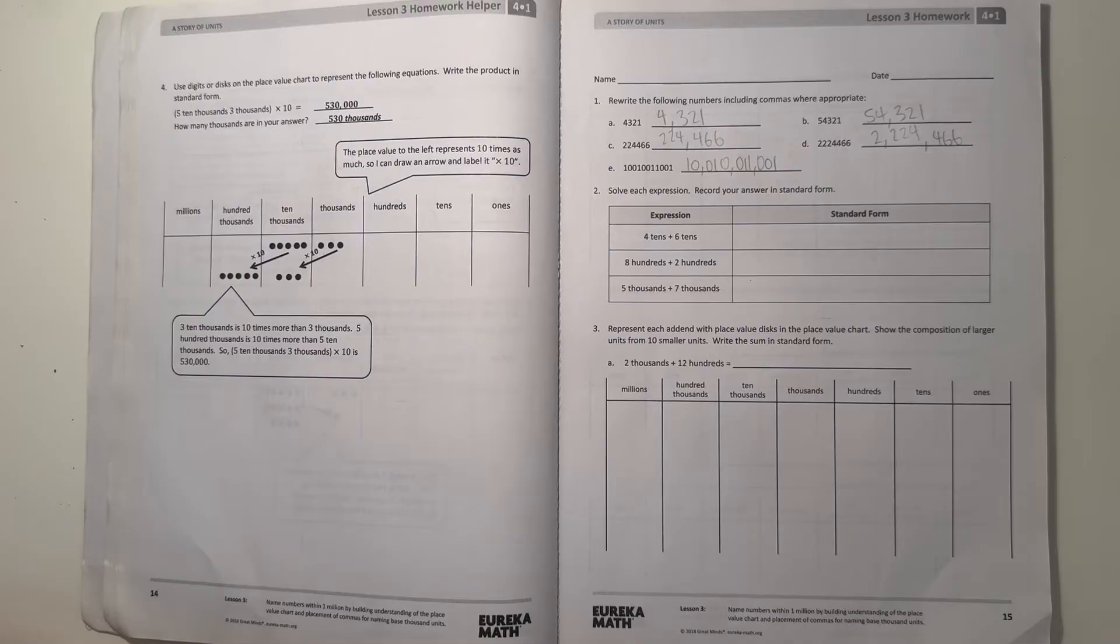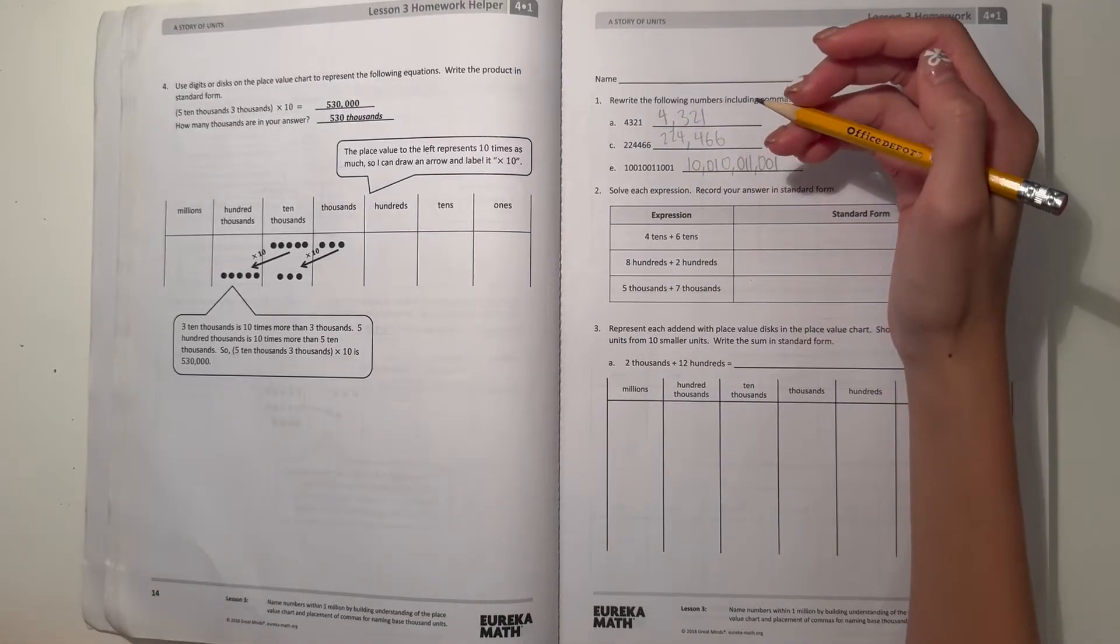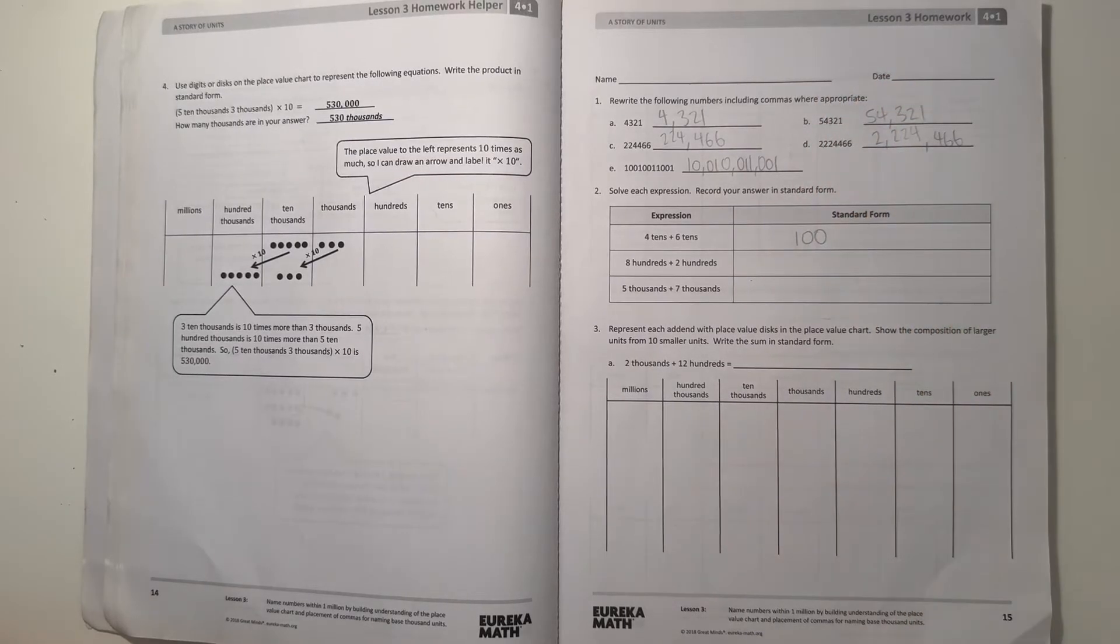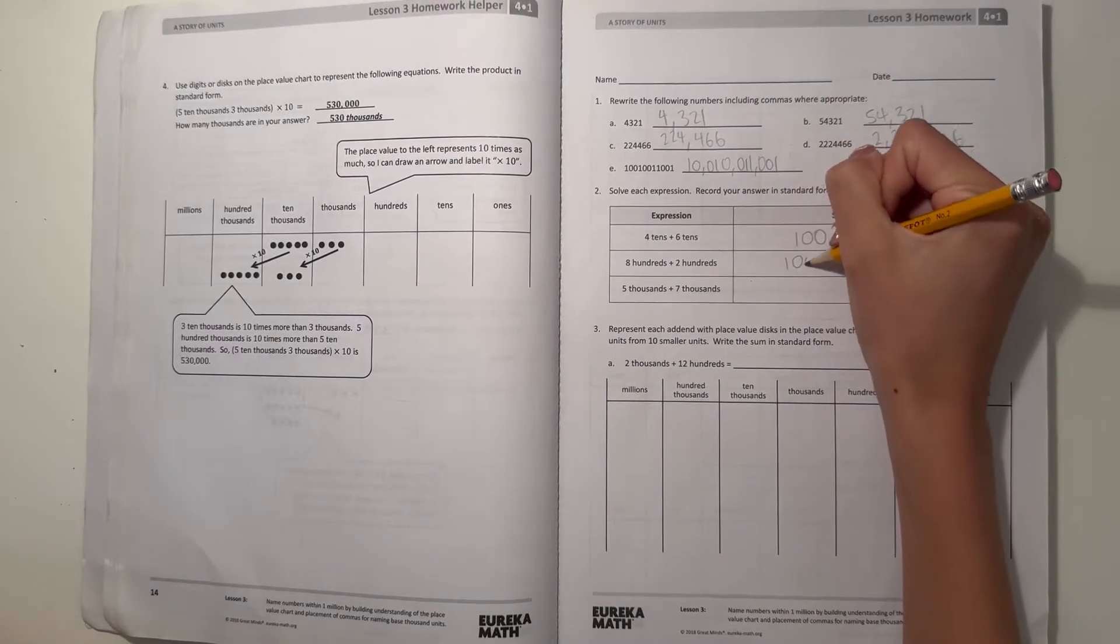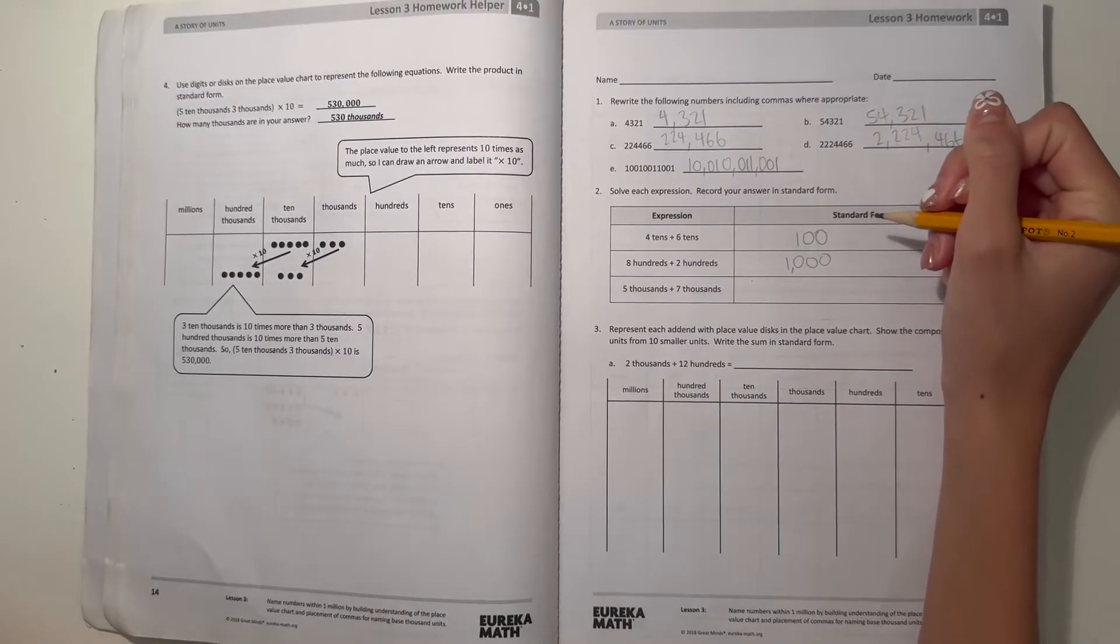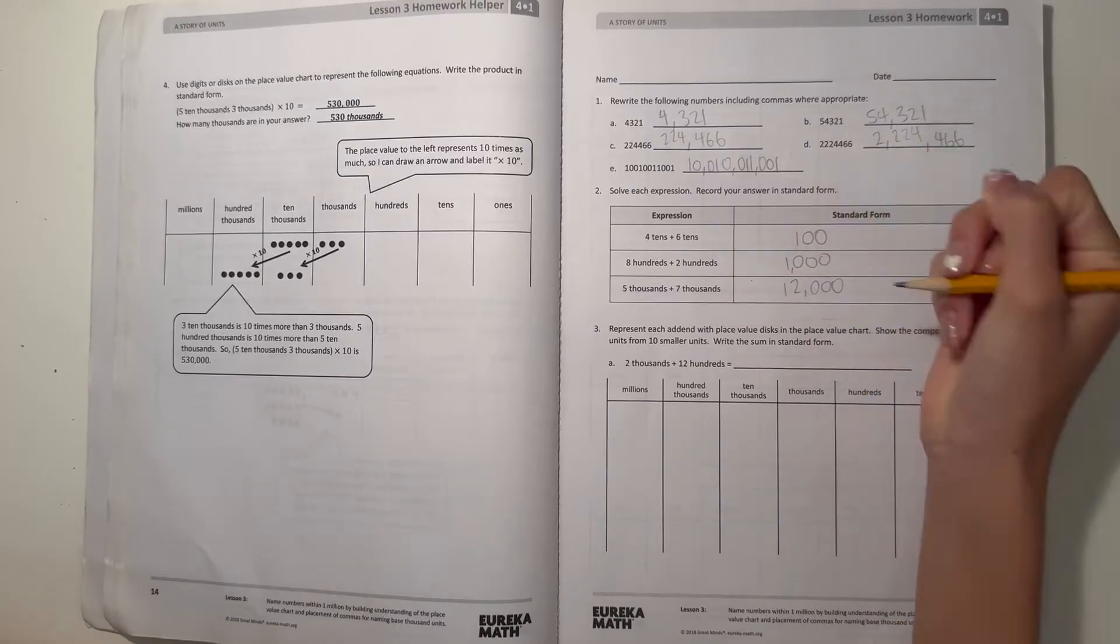All right, so number 2. Solve each expression and record your answer in standard form. Standard form is just a regular form writing the numbers. So 4 tens plus 6 tens is 10 tens, so 10 tens would be 100. 8 hundreds plus 200 is 10 hundreds, and 10 hundreds would be 1,000. And then 5 thousands plus 7 thousands is 12 thousands, and 12 thousands would be 12,000.